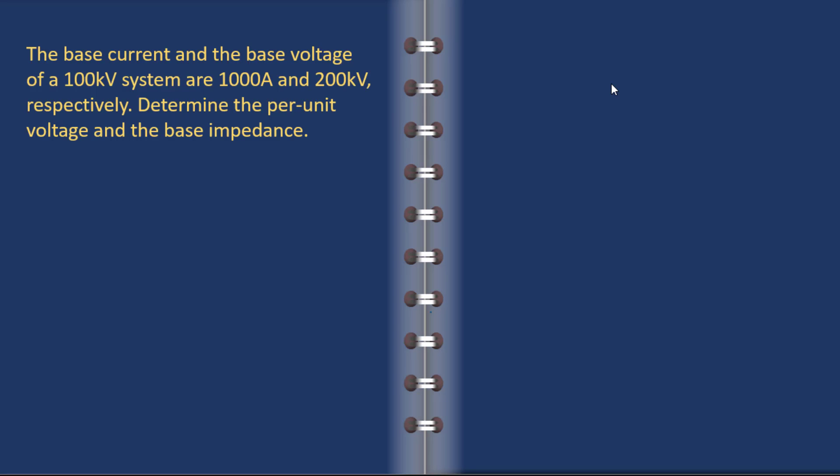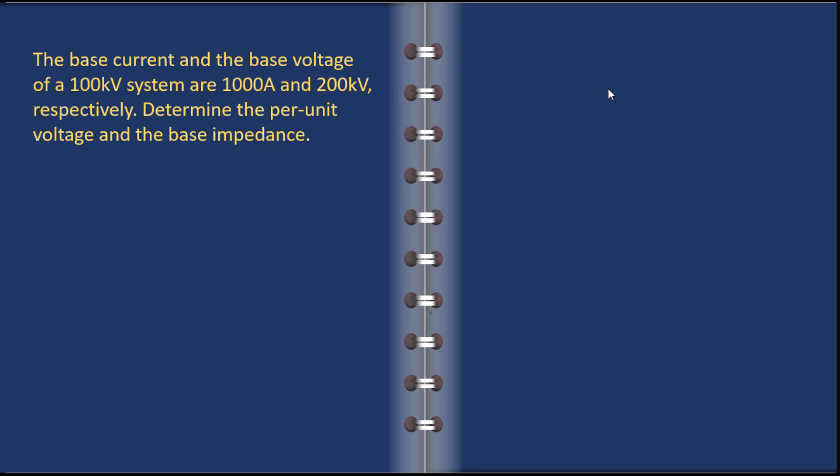Here's another problem on per-unit analysis. Base current and base voltage are given on a 100 kV system, and the question here is to determine the per-unit voltage and the base impedance. So again, we have to always start with listing what the knowns are.